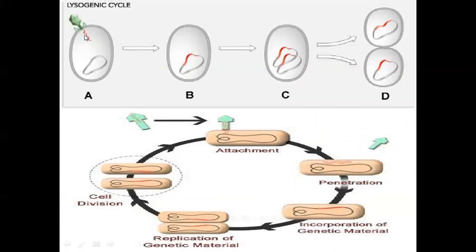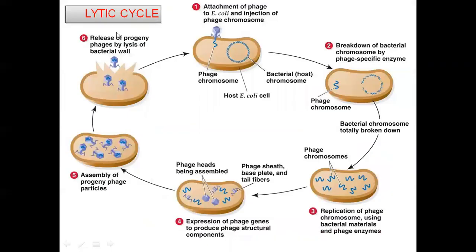In the lysogenic cycle, the DNA molecule of the viral vector is inserted and integrated along with the bacterial host cell. Multiple copies are made followed by cell division producing two different cells. One cell goes into the lytic cycle and another continues in the lysogenic cycle. The stages are: attachment, release of genetic material, recombination, integration, replication, and cell division.